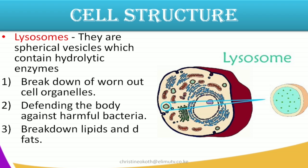The next structure we have is the lysosomes. They are spherical vesicles which contain an enzyme that we call hydrolytic. They have three main functions in the cell. The first function is to break down worn-out cell organelles. Then another function is to defend the body against harmful bacteria — this enzyme will break down harmful bacteria which come inside the cell. The last function of lysosomes is in the breakdown of lipids and fats using the same hydrolytic enzyme.